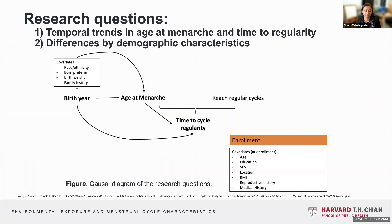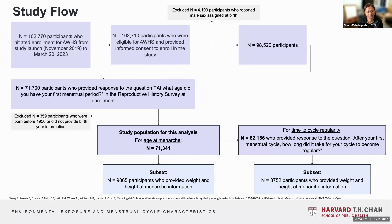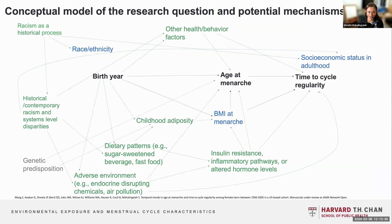This is a little bit about our question and our approach to making a causal diagram from birth year to age at menarche and time to cycle regularity, with the covariates we were evaluating and what we were able to obtain at enrollment from this cohort. In terms of the analytical sample, it was whittled down from approximately 98,520 individuals to about 71,000 who had age at menarche and about 62,000 who had responded to the time to cycle regularity question.